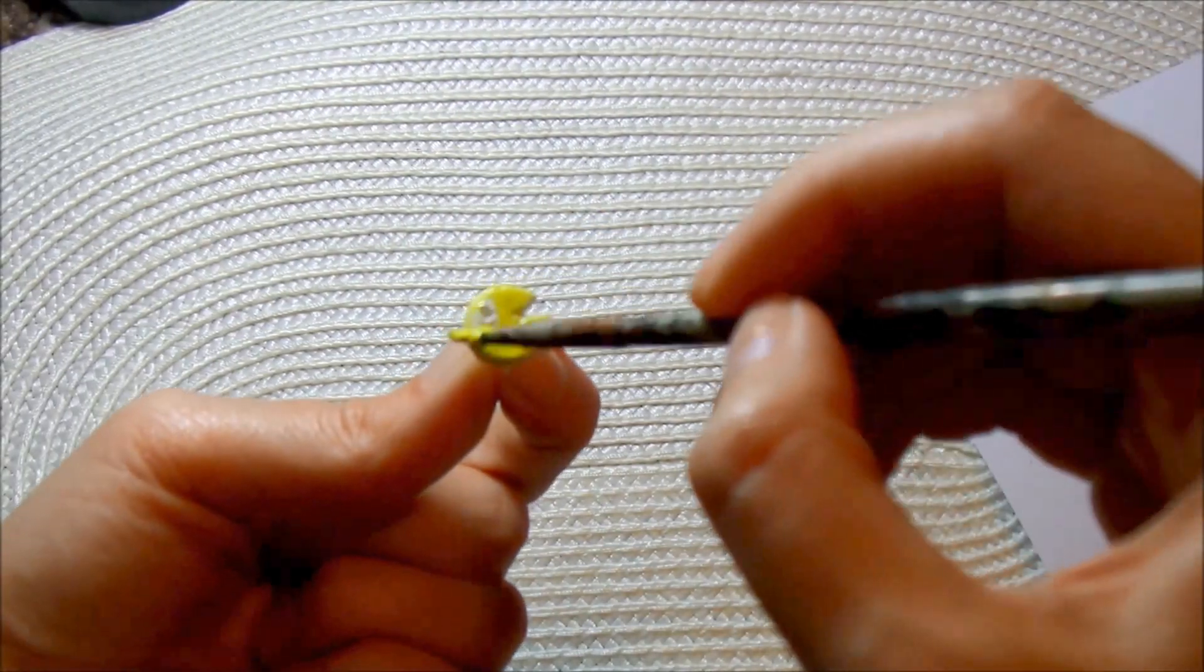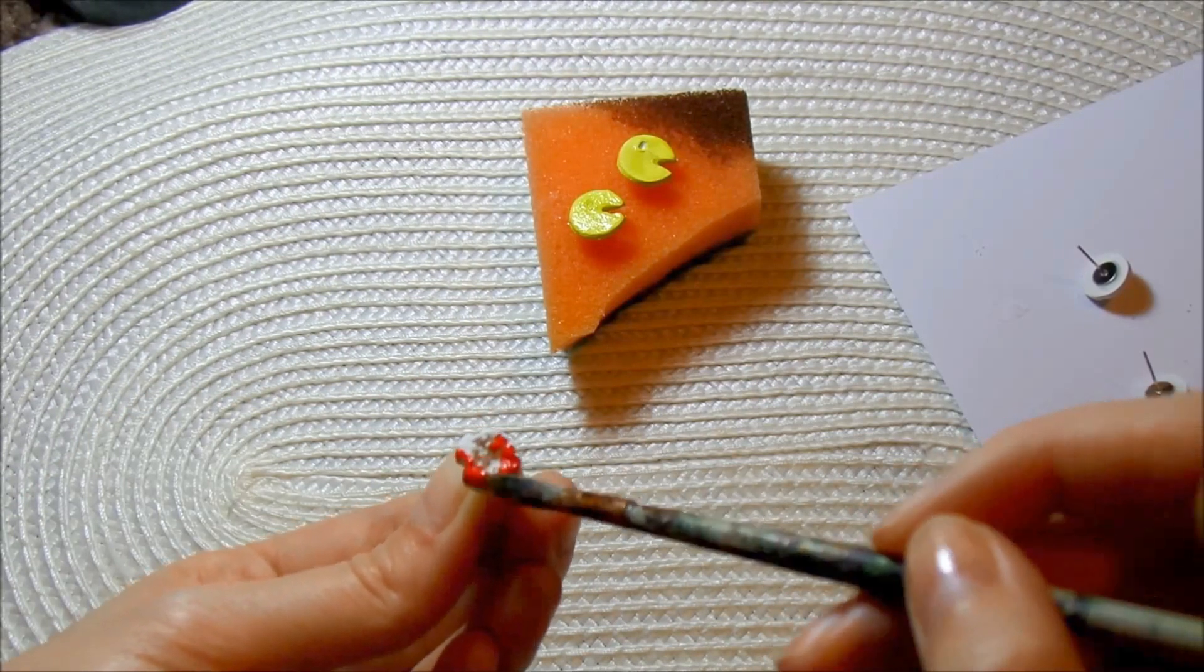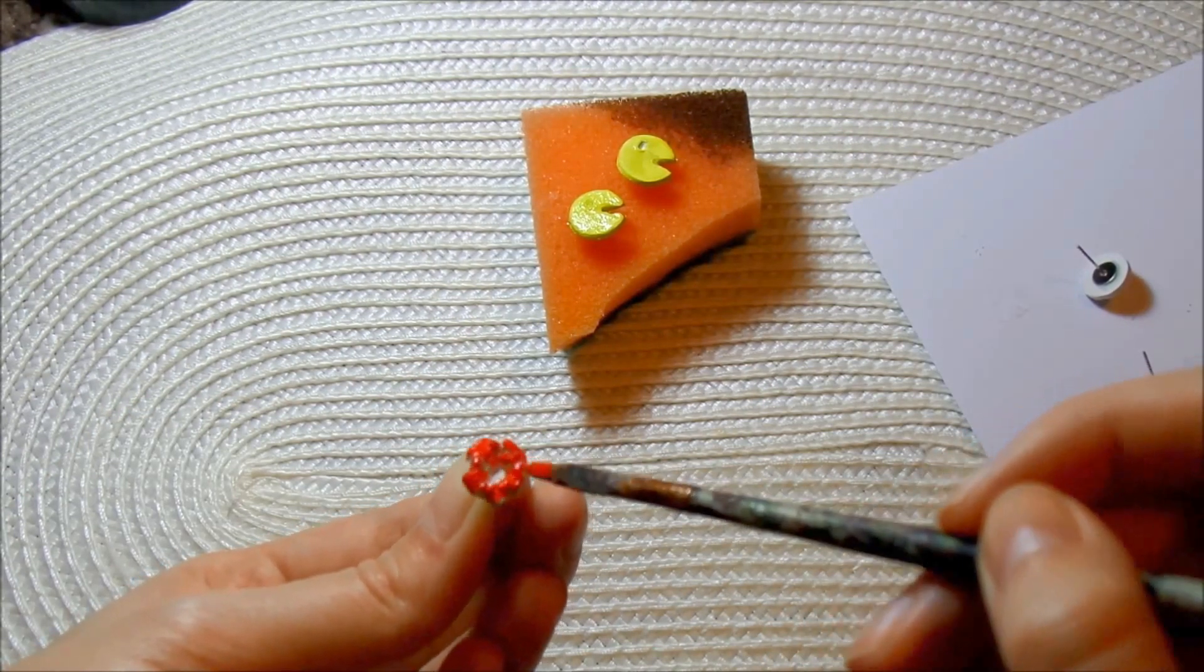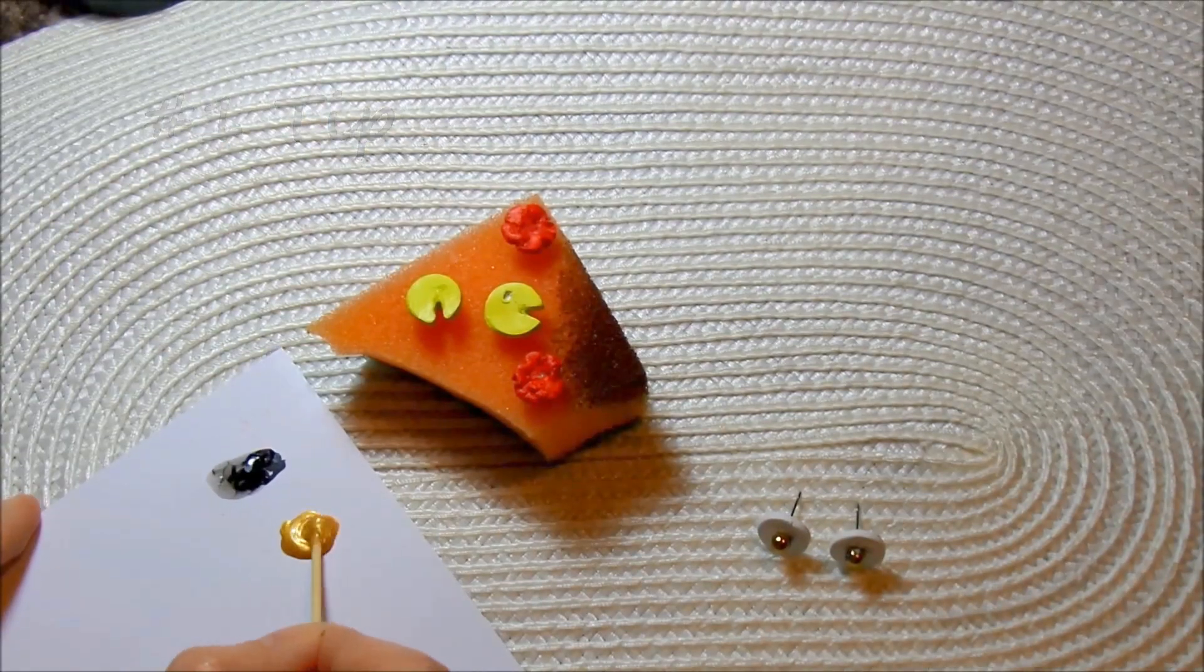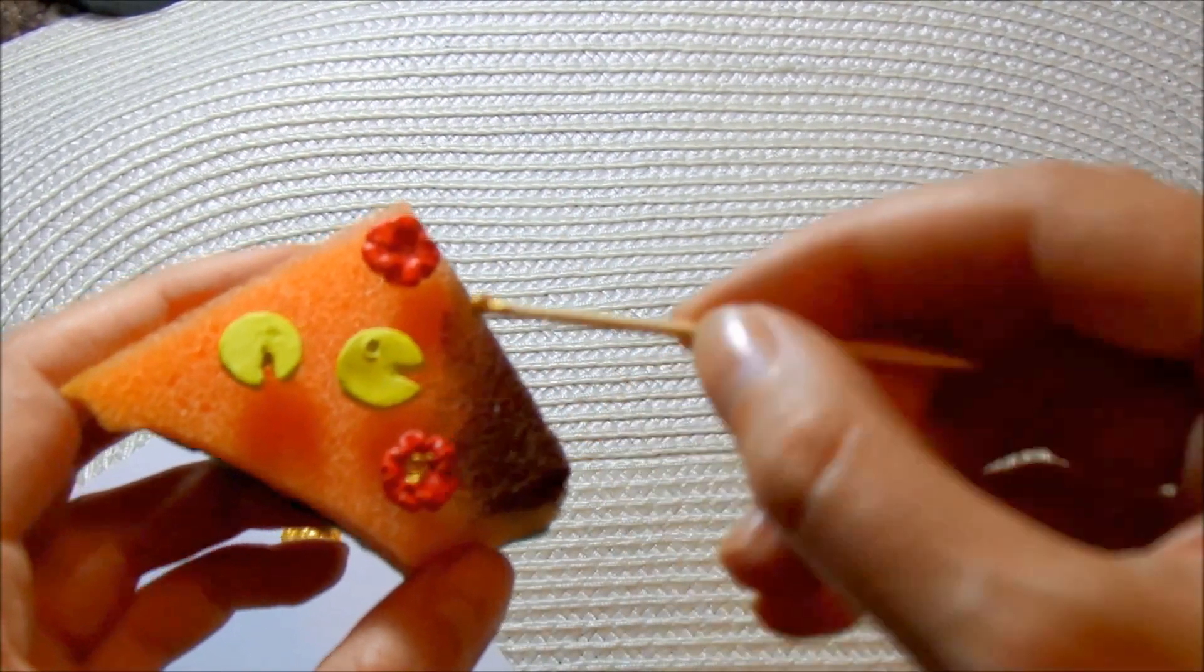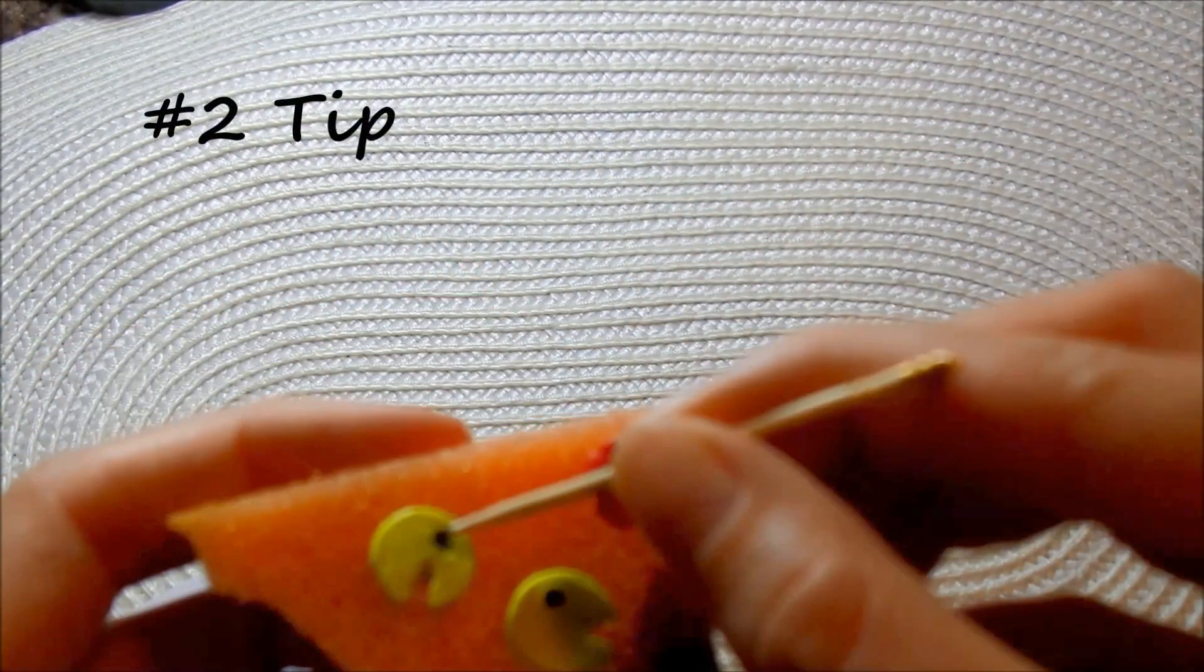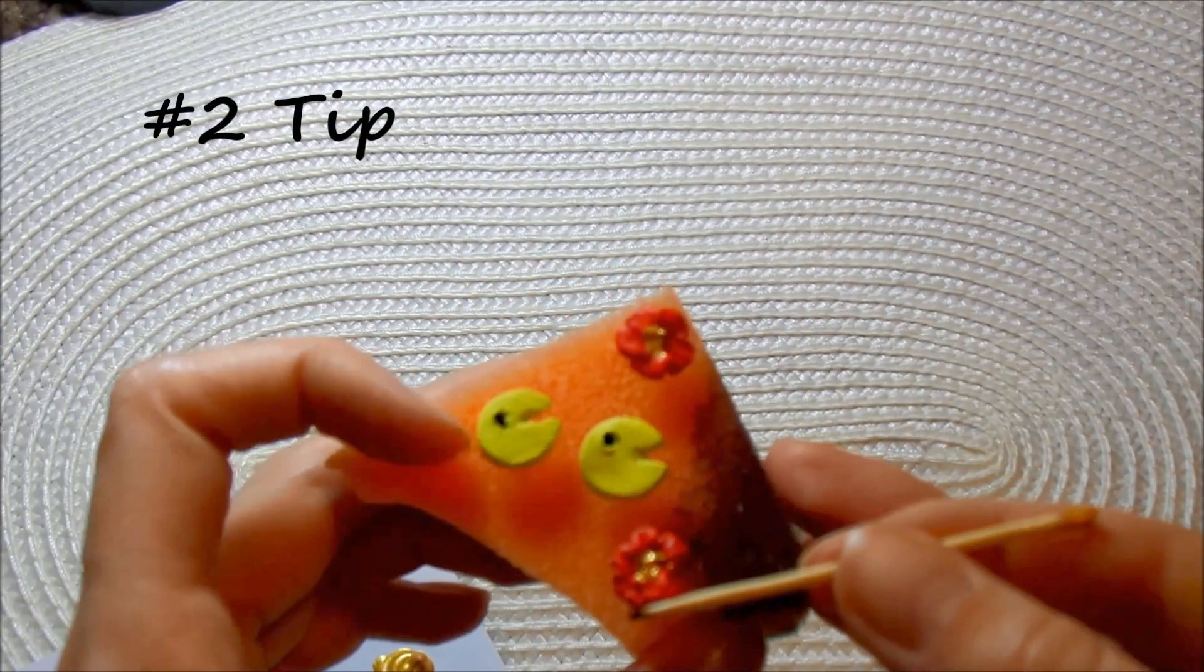Next, you can paint them as desired. Two important tips for you. Number one, push them into a sponge when leaving them to dry so you won't smudge any paint. Number two, use a toothpick to paint the small details.